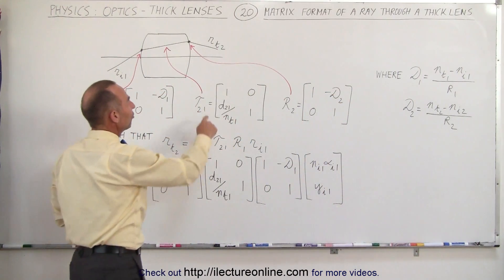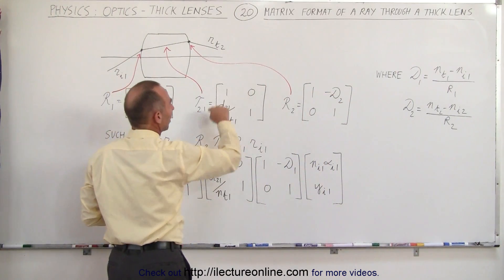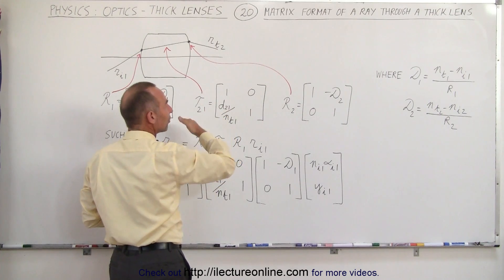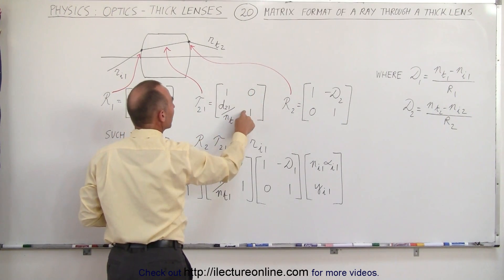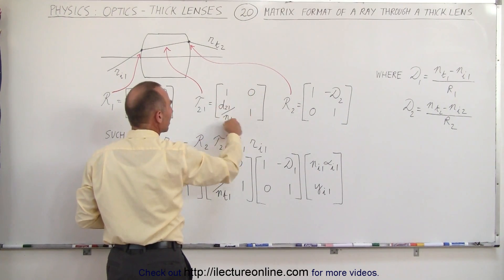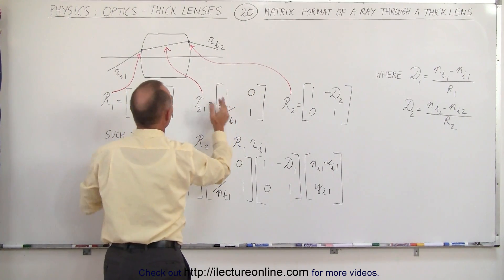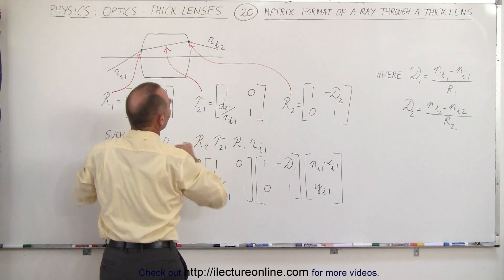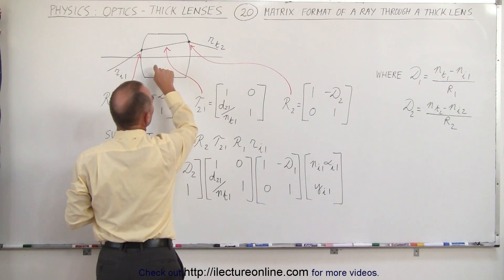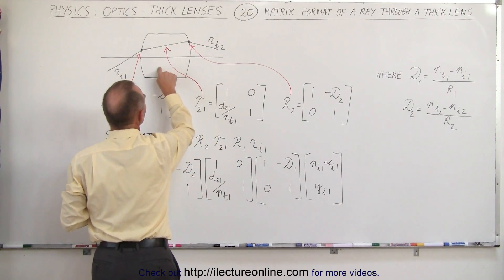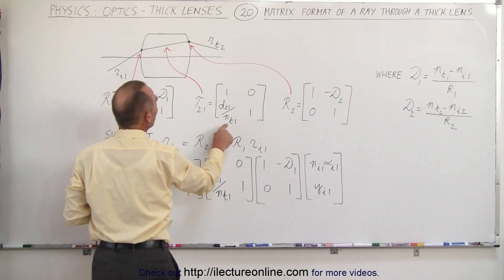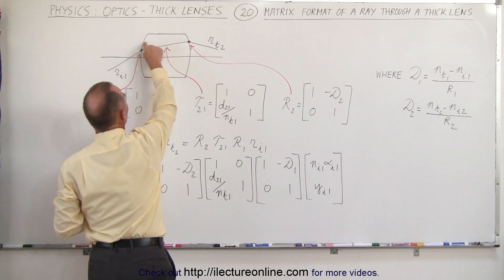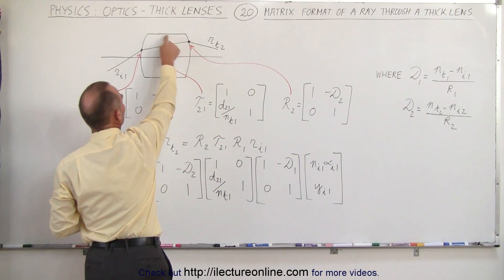The transition matrix — as we saw how it was derived in the previous video — has a 1, 0, 1 structure, and the ratio of the distance or thickness of the lens divided by the index of refraction of the lens. T1 is the index of refraction after crossing the first boundary, meaning we're inside the lens.